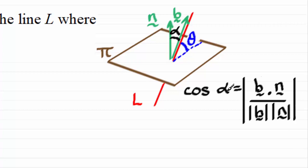And once we had found out alpha, we could take it away from 90 degrees and get theta. So that's essentially the method.